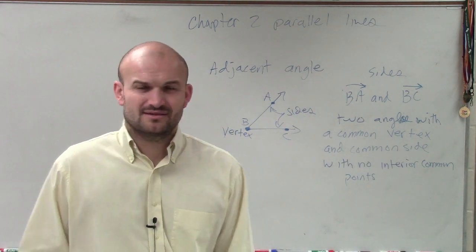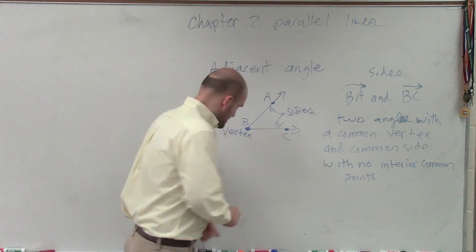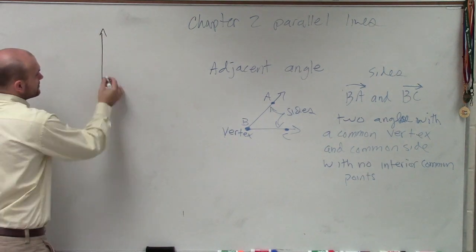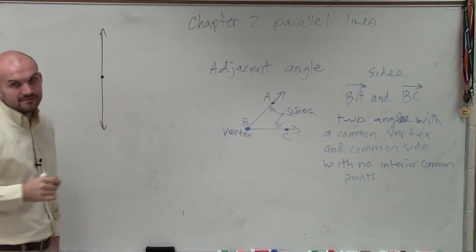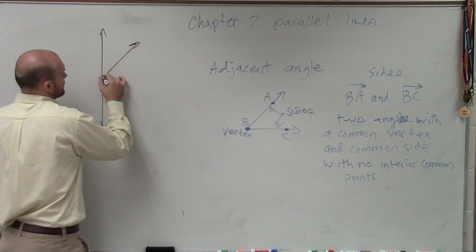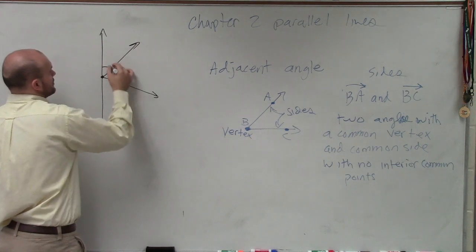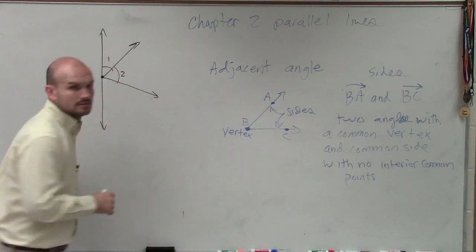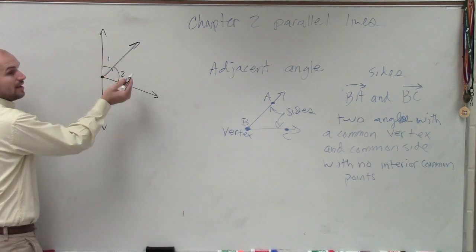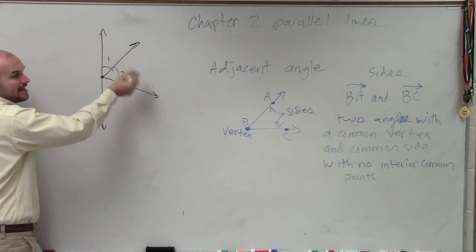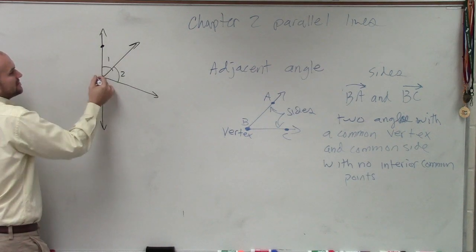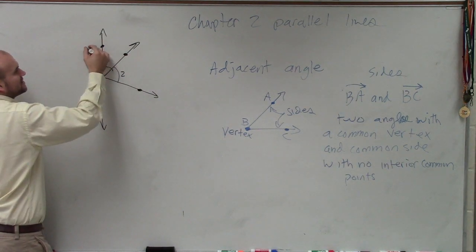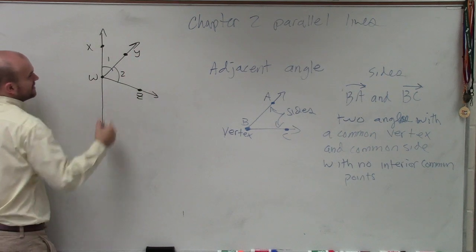So what does that just mean? Let's go ahead and take a look at an example of an adjacent angle. Let's say I have a line here. In that line, I have two of them. So I just created one angle and two angles. Well yeah, I did create three angles, but I'm just describing now these two angles. Let's call this vertex W. We'll call this X, Y, and Z.